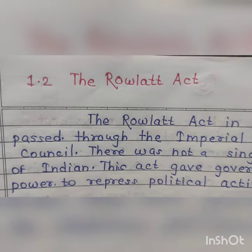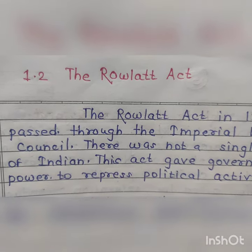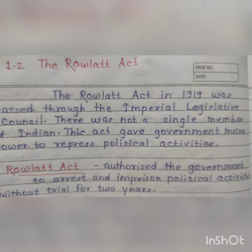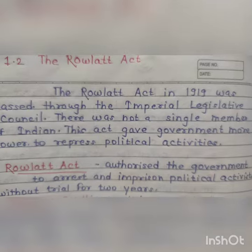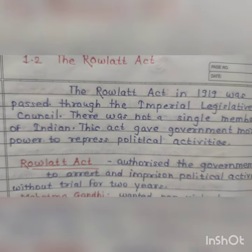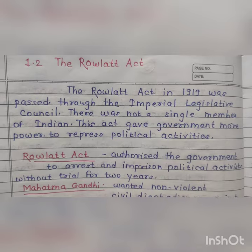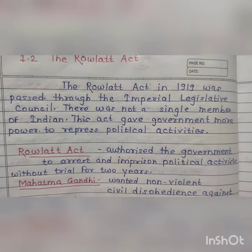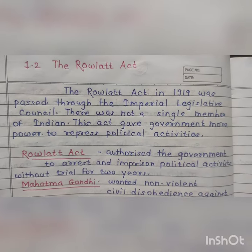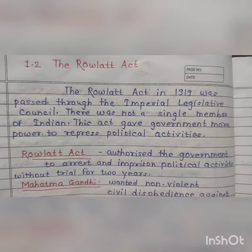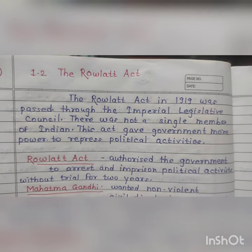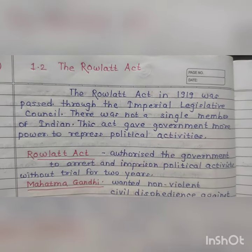Today's topic is the Rowlatt Act. It was passed in 1919 through the Imperial Legislative Council. There was not a single Indian member in this committee. This act gave the government enormous powers to repress political activities.